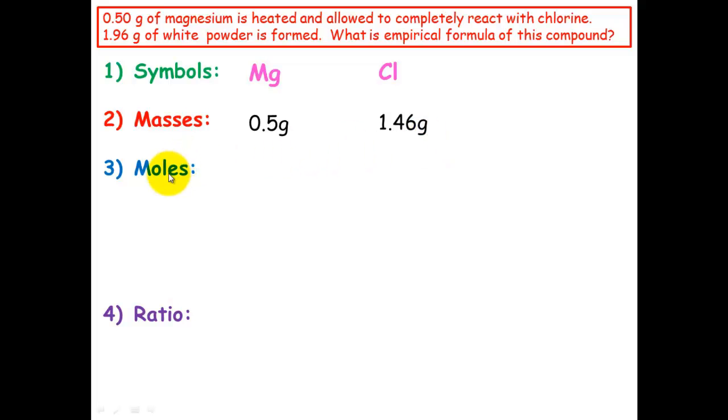So now we just need to work out the number of moles, which is mass divided by molar mass. So 0.5 divided by 24.3 equals 0.0206. And for chlorine, 1.46 divided by 35.5, and that equals 0.0411.